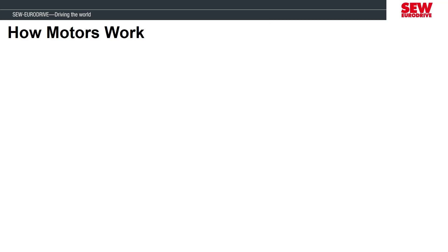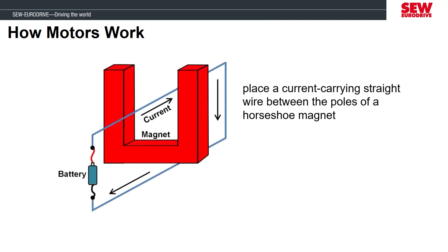Let's start by discussing how a motor works. Here we have a simple physics experiment with a horseshoe magnet, a piece of wire, and a battery. For the experiment to work, it would need to be a battery that can produce a fair amount of current, like a car battery.